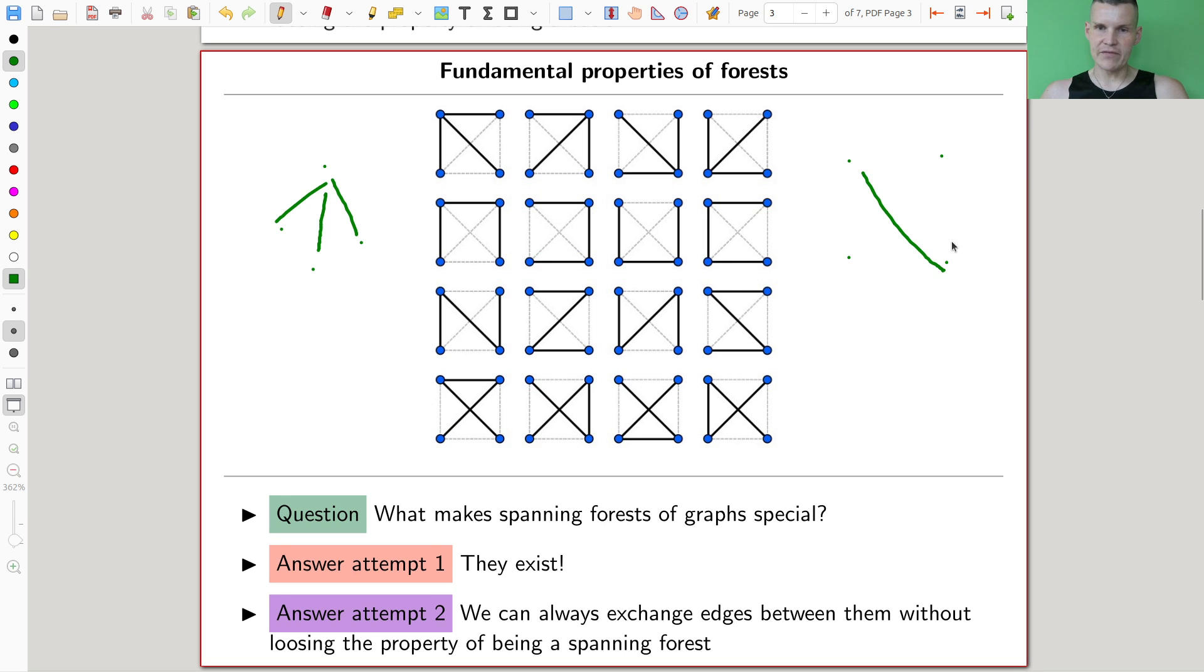So whenever I say forest, you could think tree. And a spanning tree is just any graph and you take out edges until you hit a tree. And you will always find spanning trees. So here in my background illustration, I have this graph, which is not cycle free. So it's not a tree, but I have whatever 16 spanning trees. For example, I could just take those edges here and I would have corresponding spanning tree.